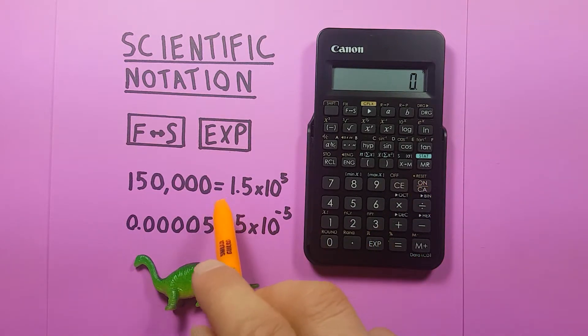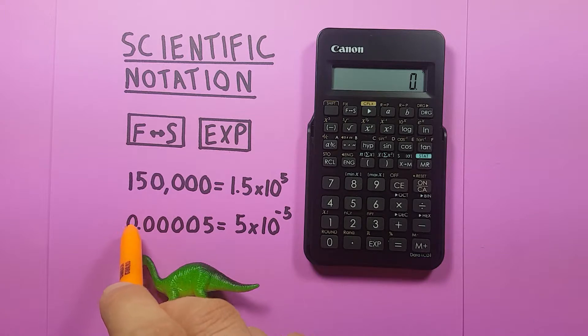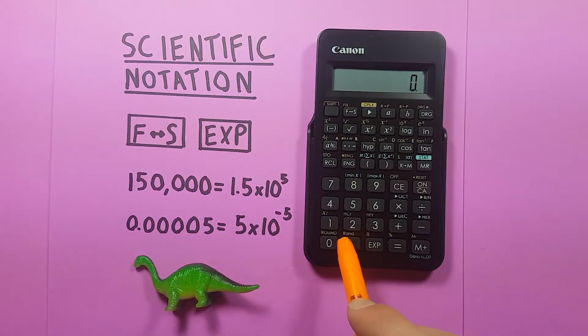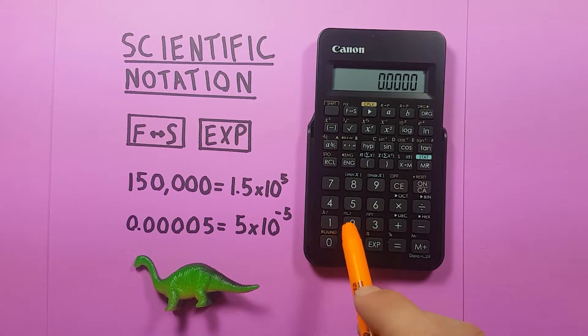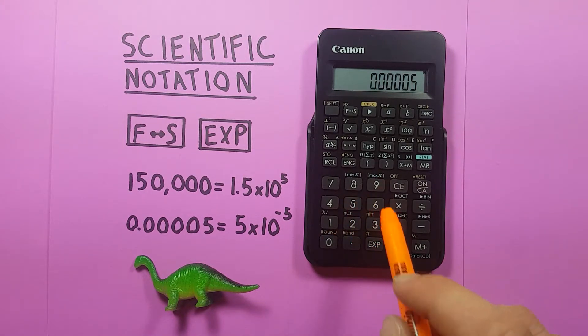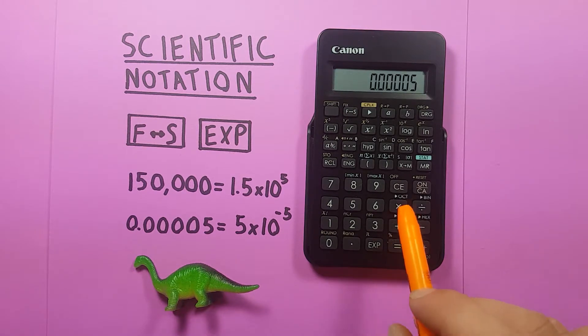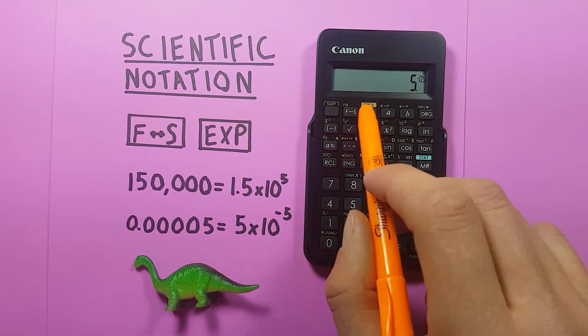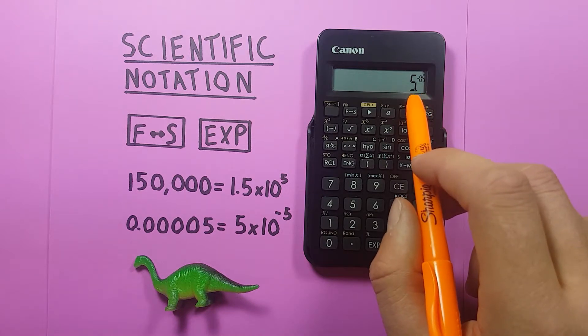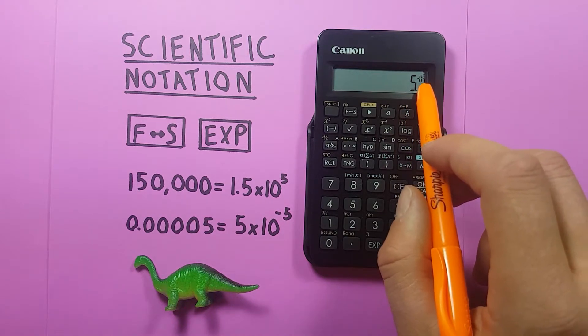This also works with small numbers, so let's say we had 0.00005 and wanted to convert it to scientific notation. Remember, first we press the equals key and then the F2S key, and you can see we have 5 times 10 to the power of negative 5.